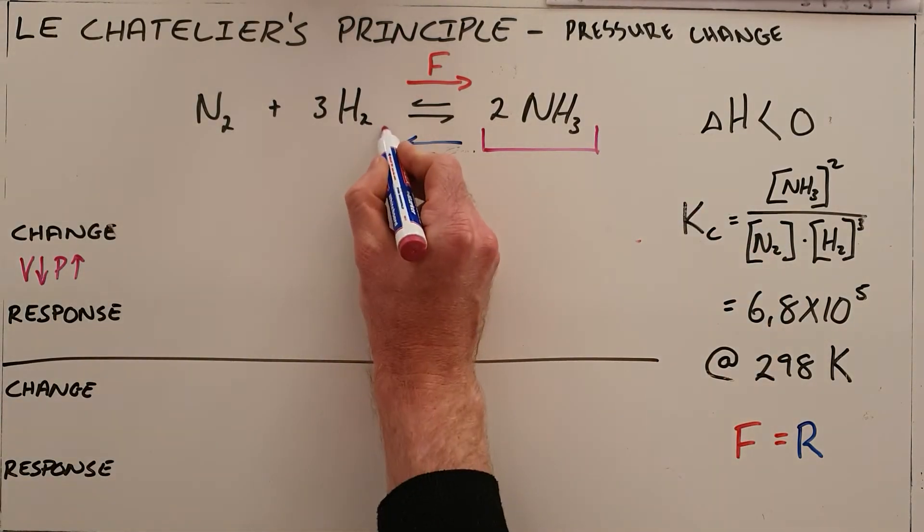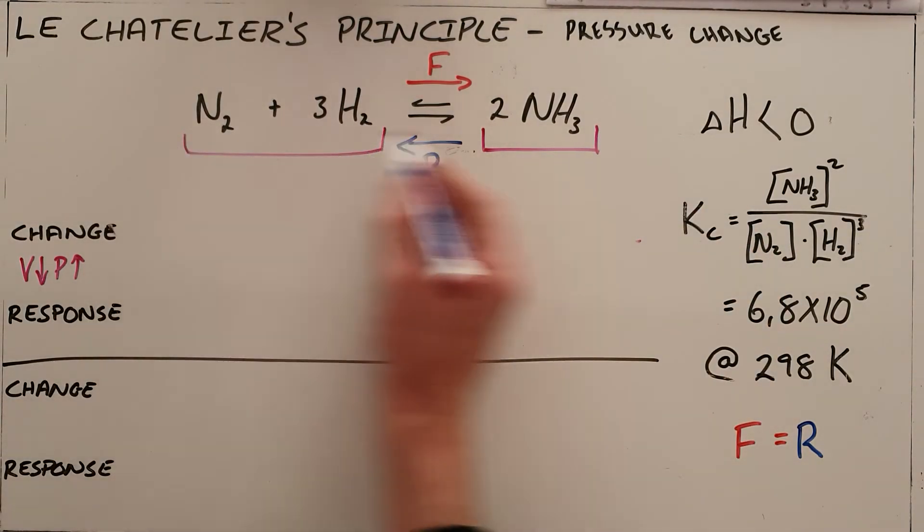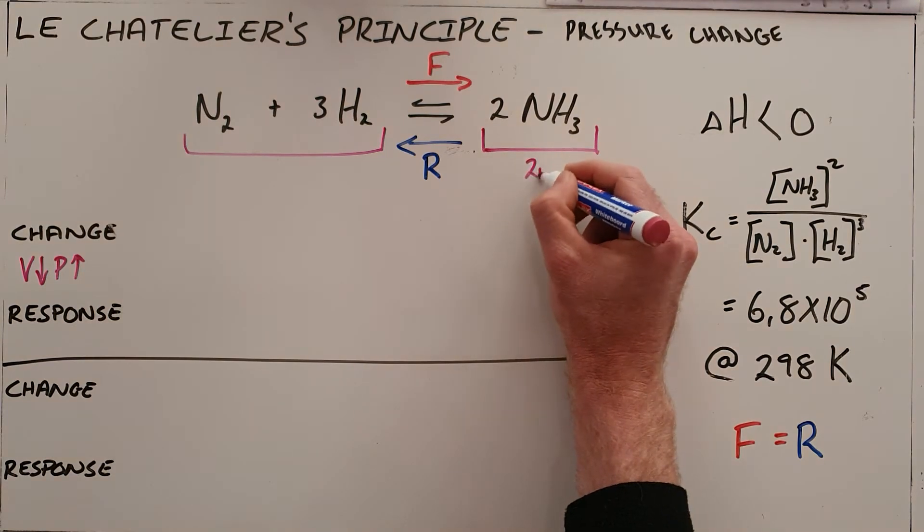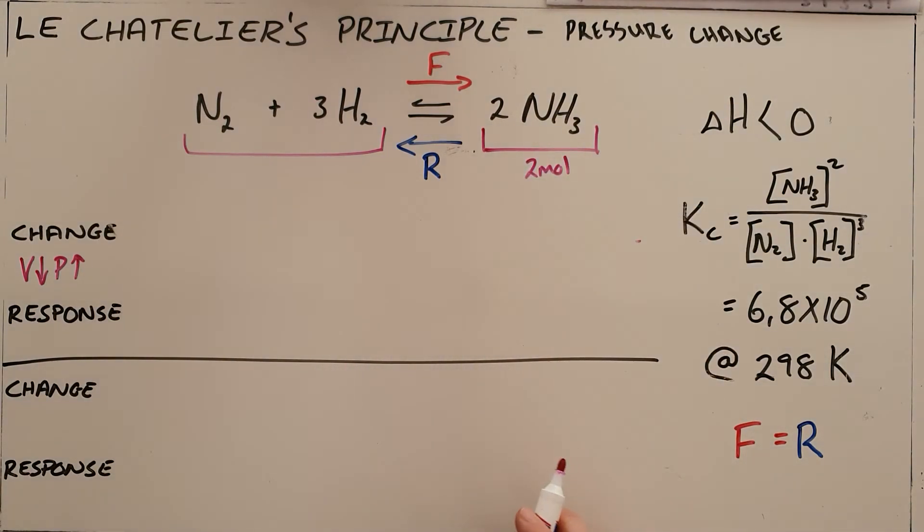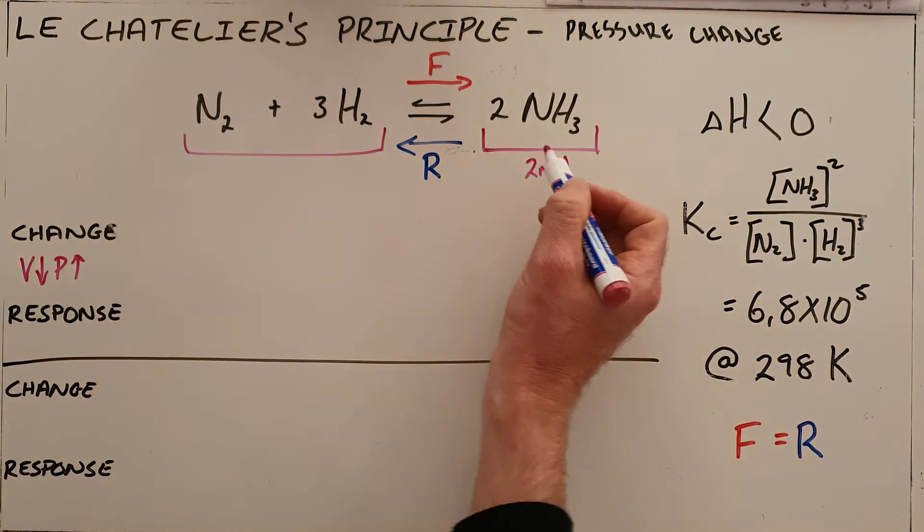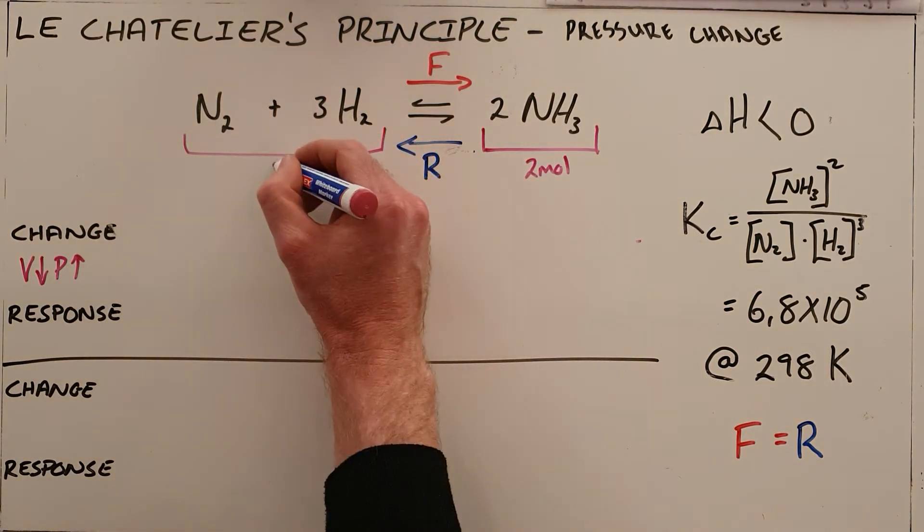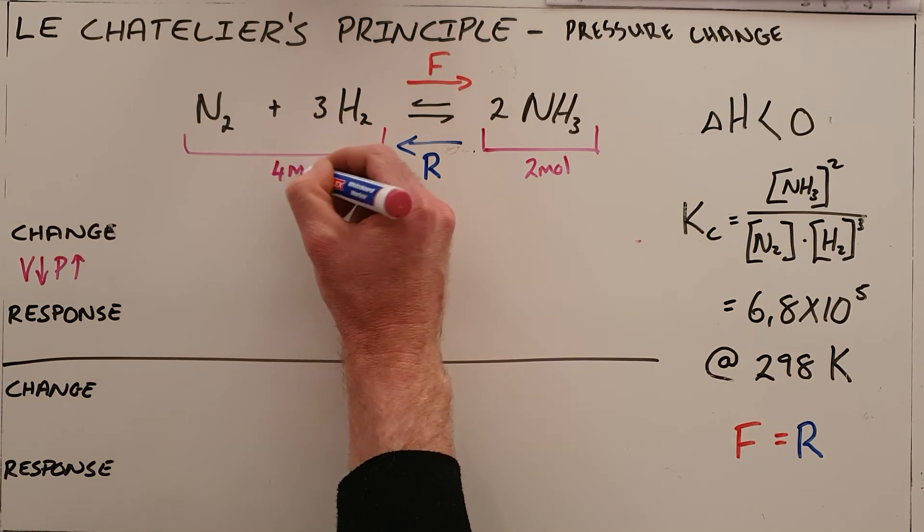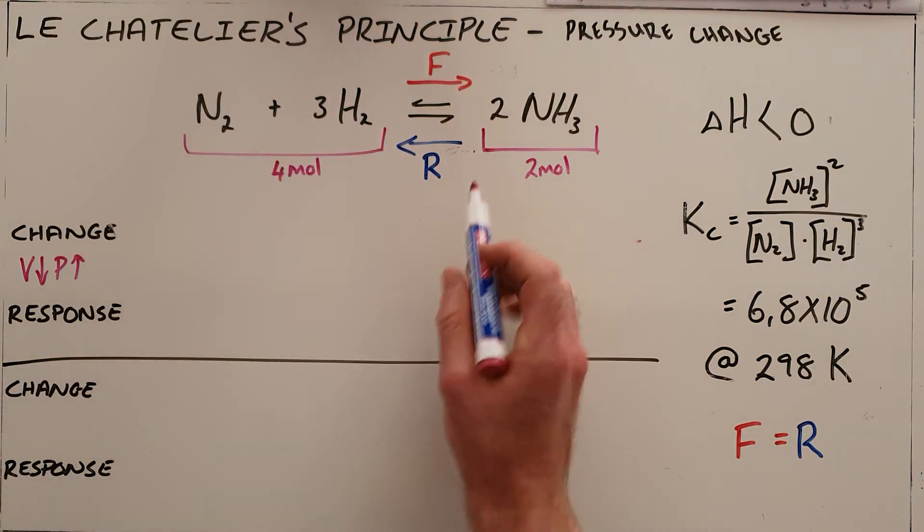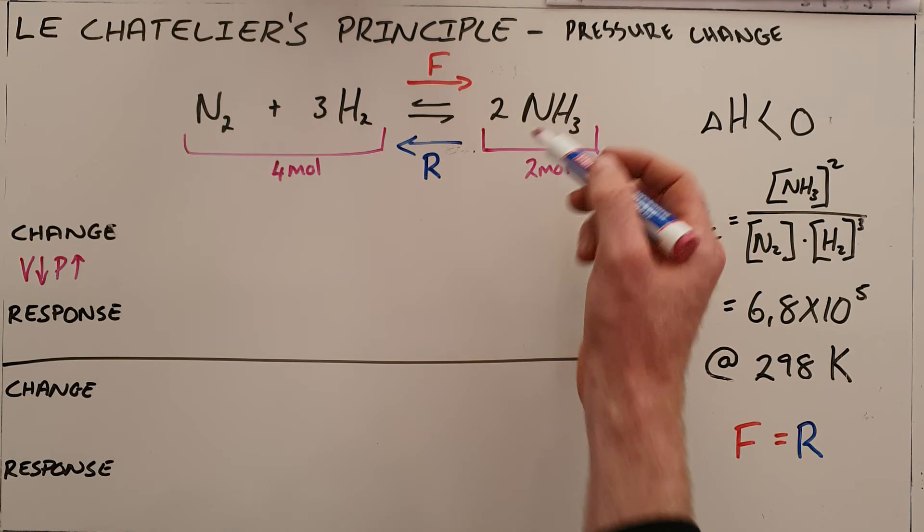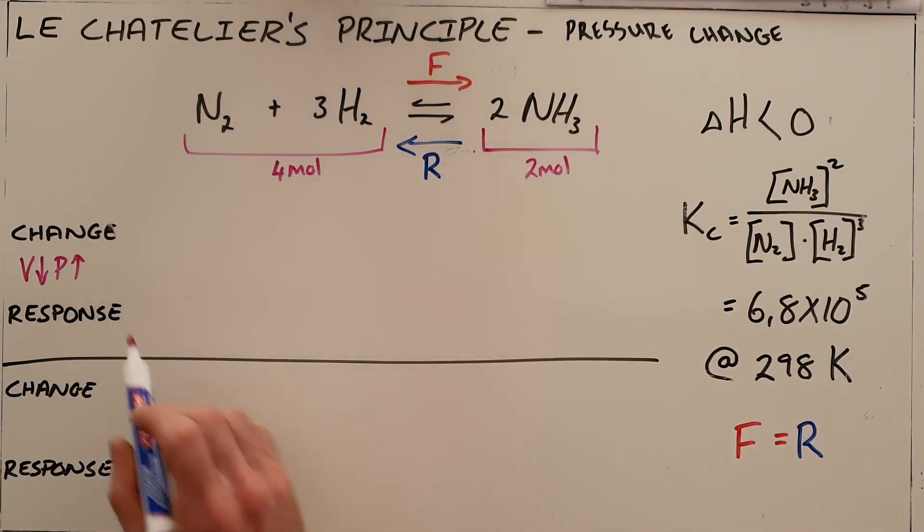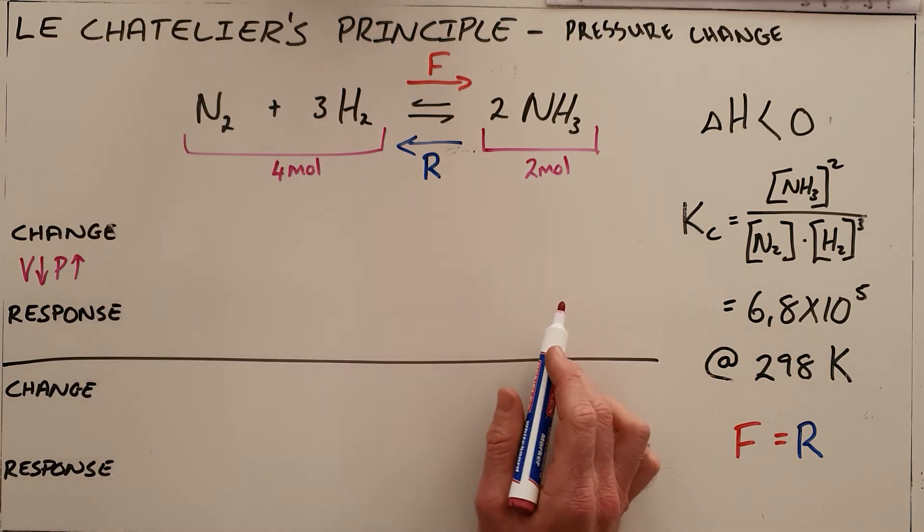So we count the number of gas molecules on each side of this reaction, and we can see that the forward reaction only produces two moles of substance, two ammonia molecules or moles, whereas the reverse reaction produces one nitrogen mole and three hydrogen moles, so four moles of substance. So the forward reaction clearly produces less stuff, which would take up less space. So in this change here, where we have decreased the volume and increased the pressure, we have said there is now less space available.